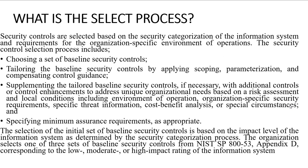What is the select process? Security controls are selected based on the security categorization of the information system and requirements for the organization's specific environment of operations. The security control selection process includes: one, choosing a set of baseline security controls; two, tailoring the baseline security controls by applying scoping, parametrization, and compensating control guidelines; three, supplementing the tailored baseline with additional controls or control enhancements; and four, specifying minimum assurance requirements as appropriate.